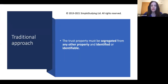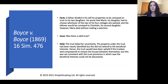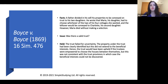The traditional approach is that trust property must be segregated from any other property and identified or identifiable. The case representing the traditional approach is Boyes v. Boyes. You should always cite a relevant case for every principle you put in your answer, so if citing the traditional approach to certainty of subject matter, make sure you reference Boyes v. Boyes.